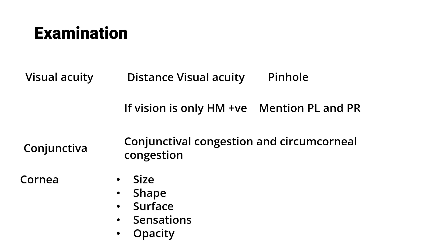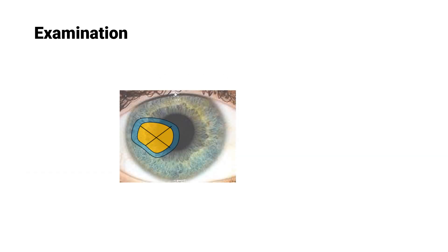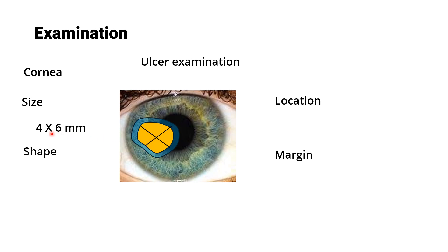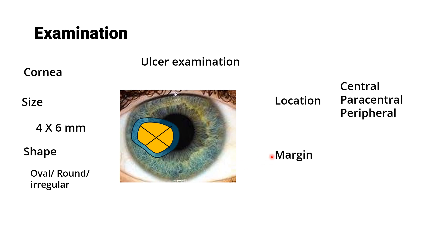For the cornea, assess size, shape, surface, sensations, and opacity versus transparency. When describing the corneal ulcer, note the size — measure in both dimensions and present as, for example, four by six millimeters. Note the shape — oval, circular, round, or irregular. Note the location — central involving the pupillary area, paracentral between the pupillary area and periphery, or peripheral.